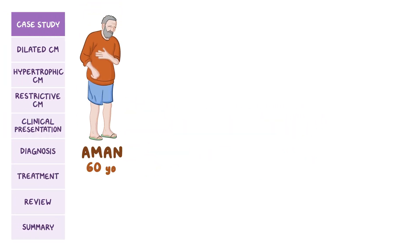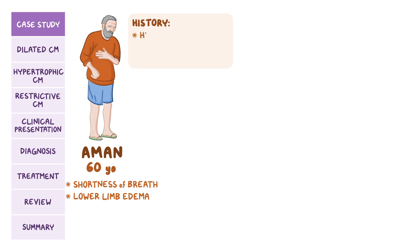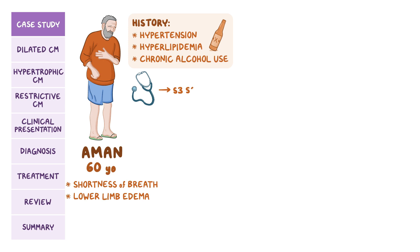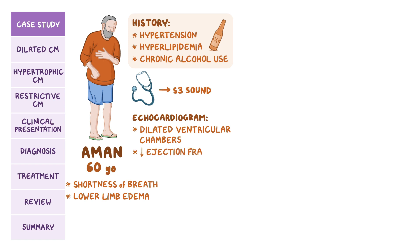Amon is a 60-year-old male who came into the clinic with shortness of breath and lower limb edema for the past three months. He has a history of hypertension, hyperlipidemia, and chronic alcohol use. On auscultation, an additional S3 sound is heard. An echocardiogram is performed, which shows dilated ventricular chambers and a reduced ejection fraction.